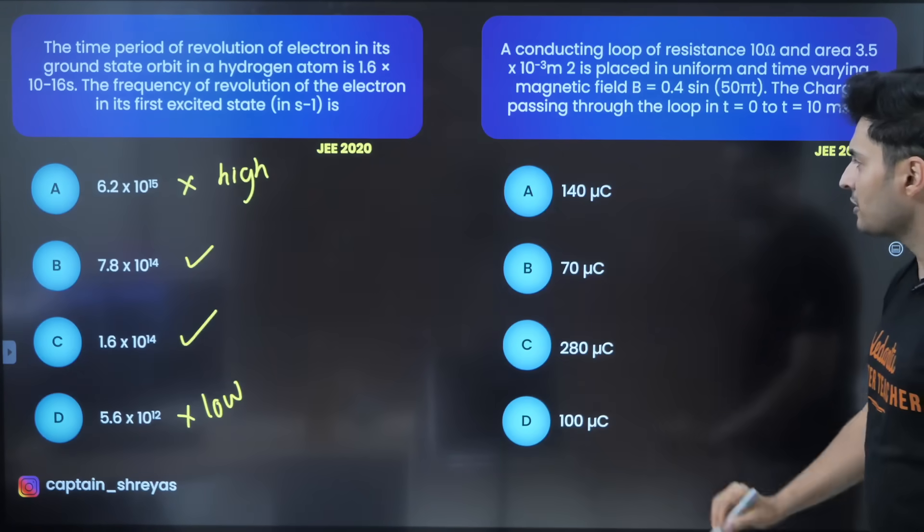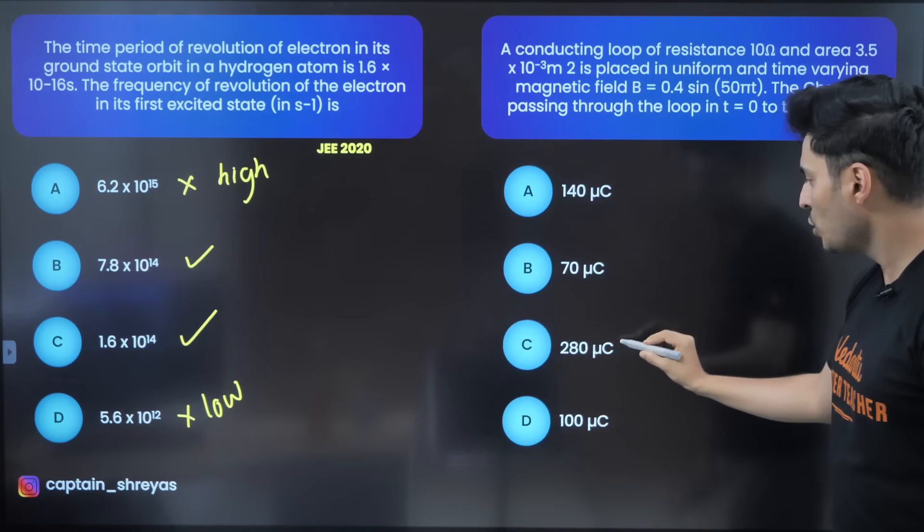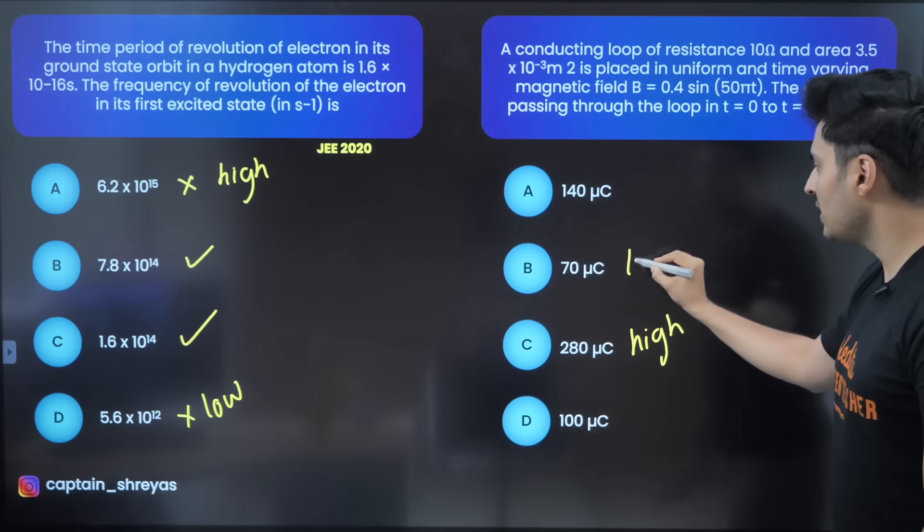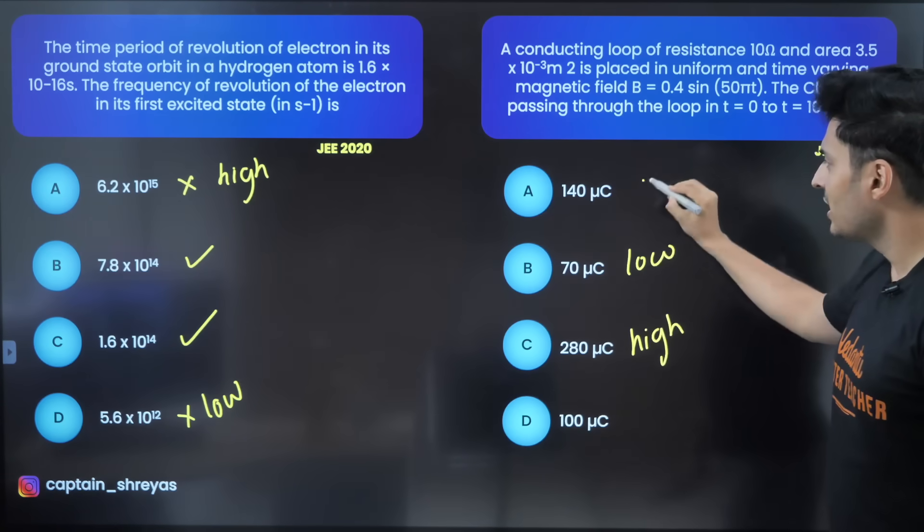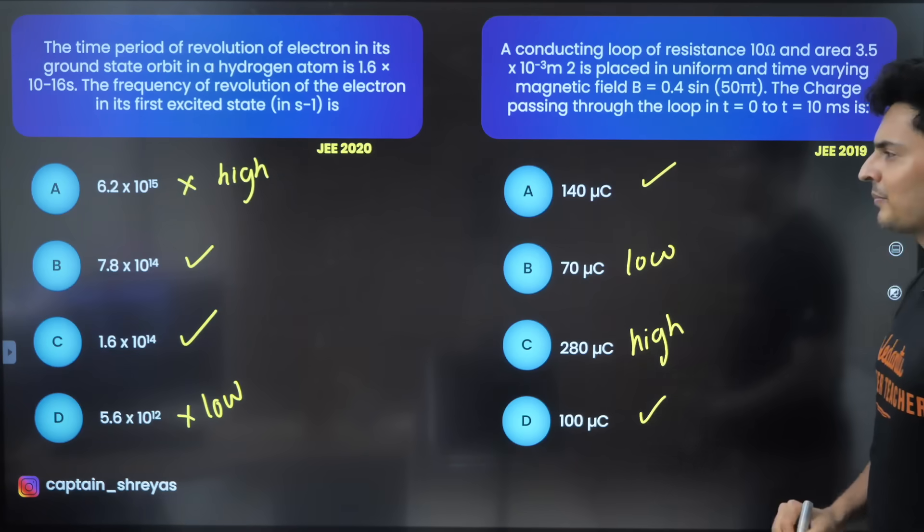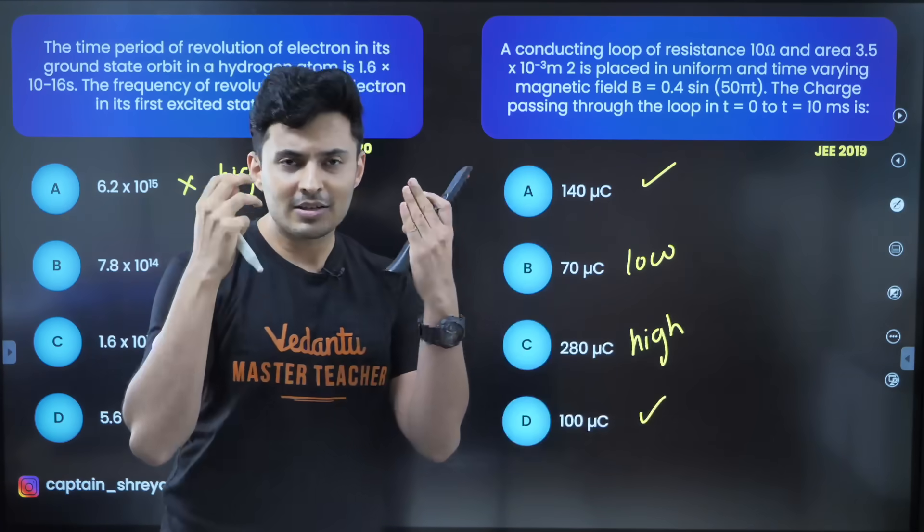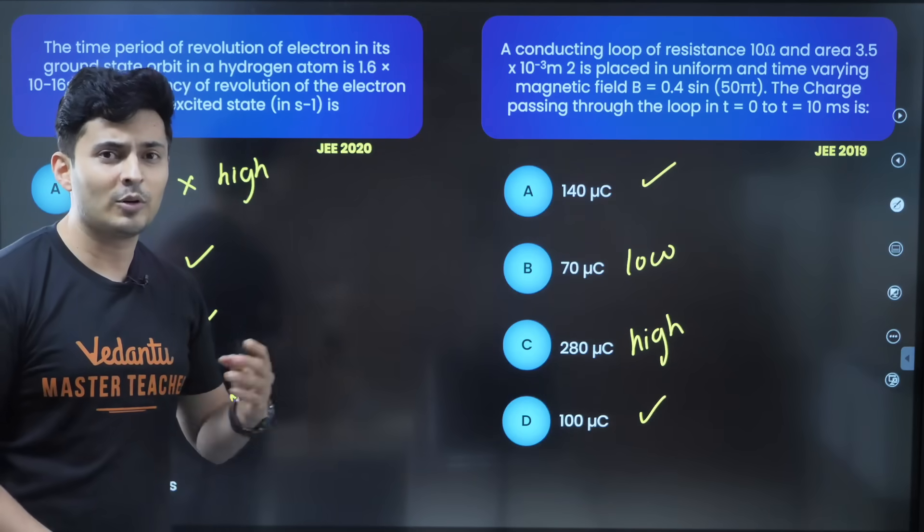Great, now look at these options over here. I can see 280 is the highest value and I can see 70 is the lowest value, so discard these two options, either 140 or 100. Make a guess, it's up to you.